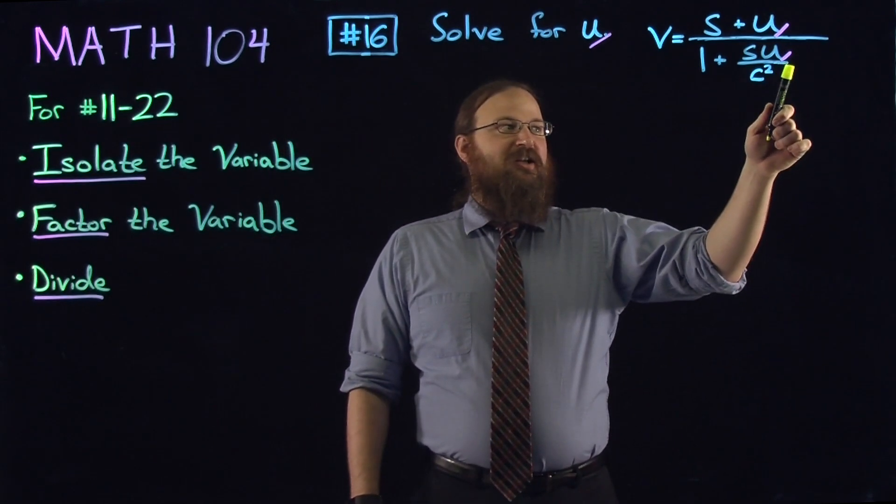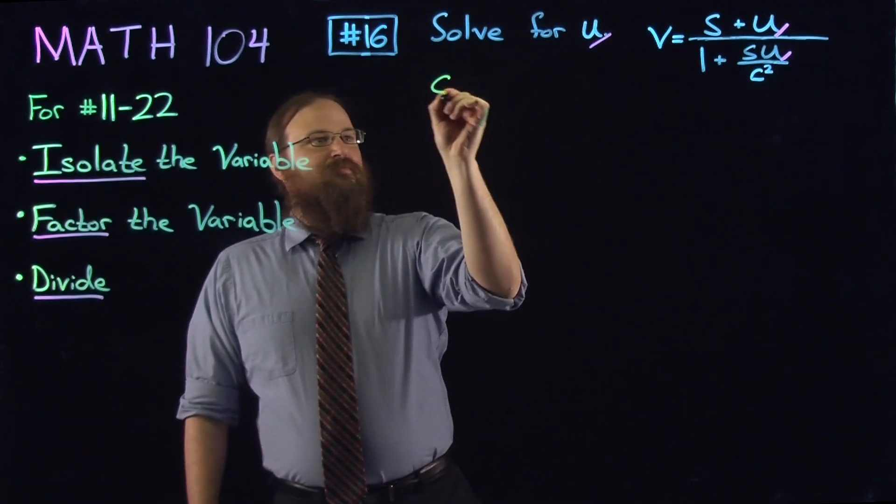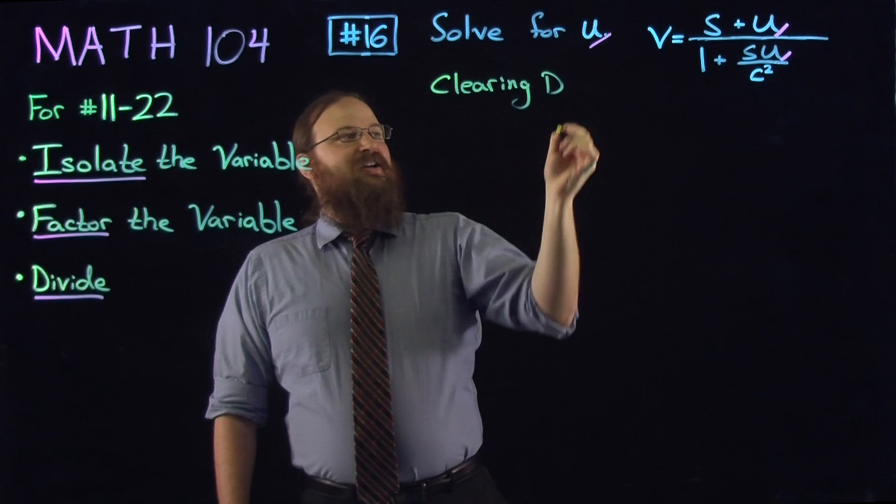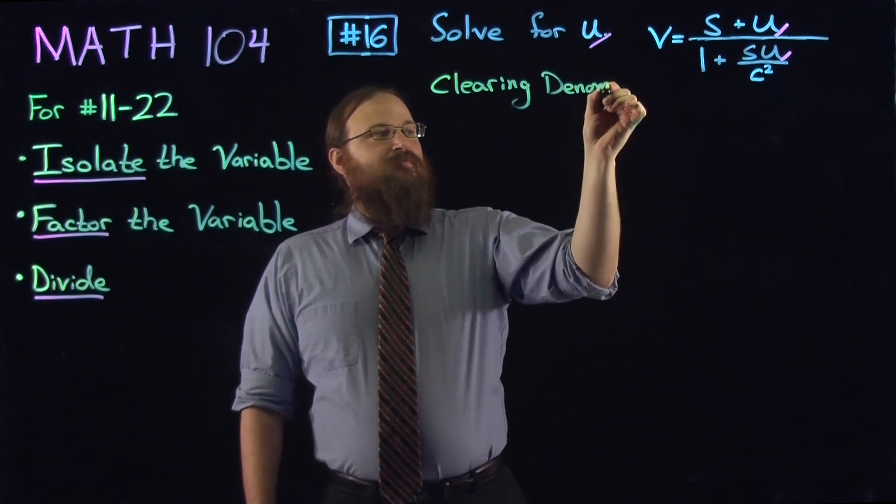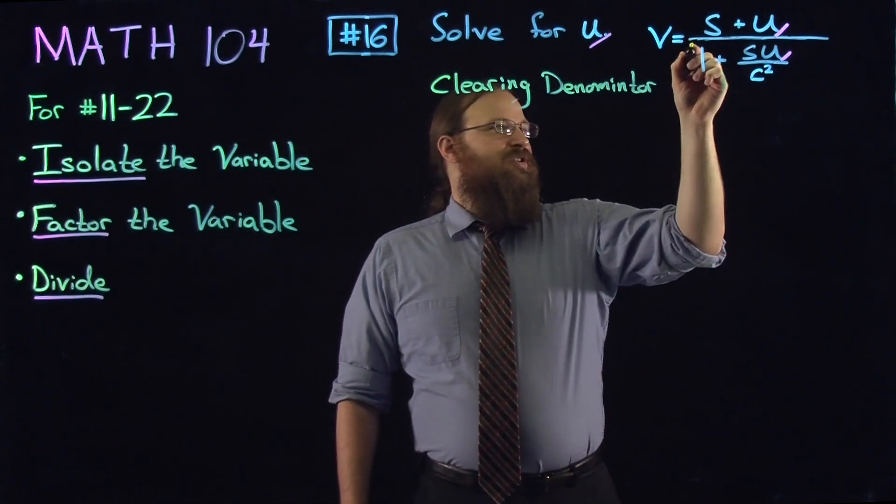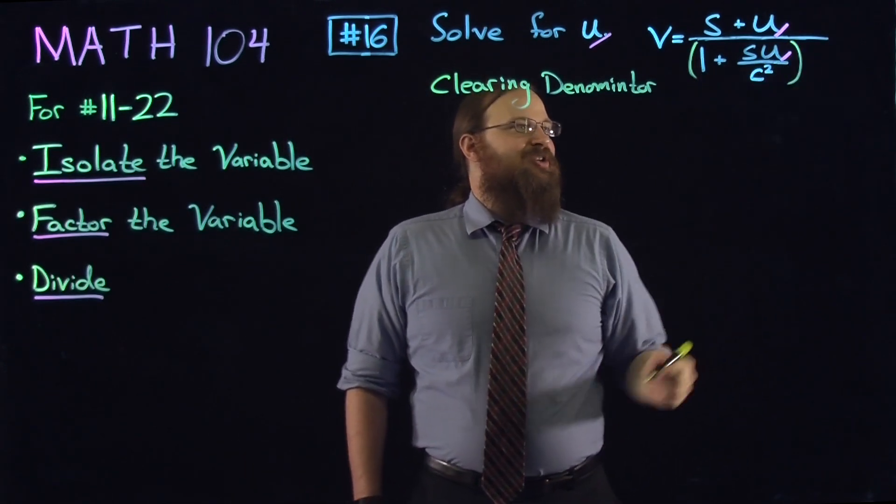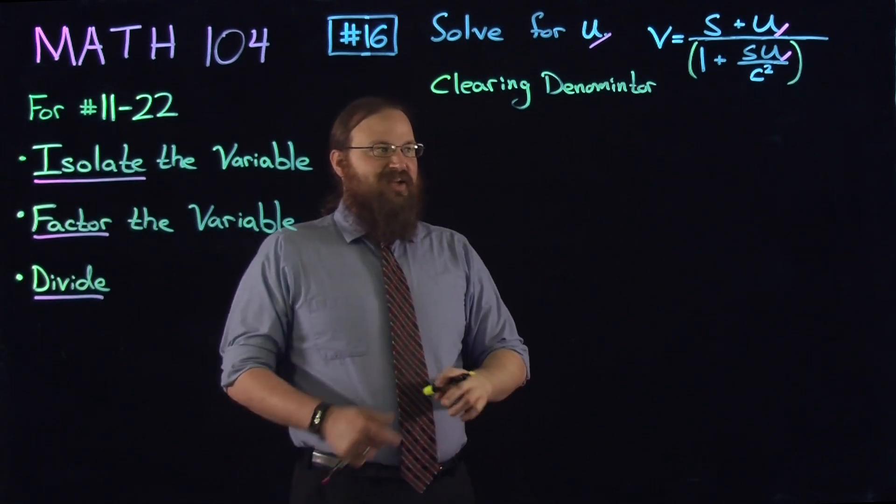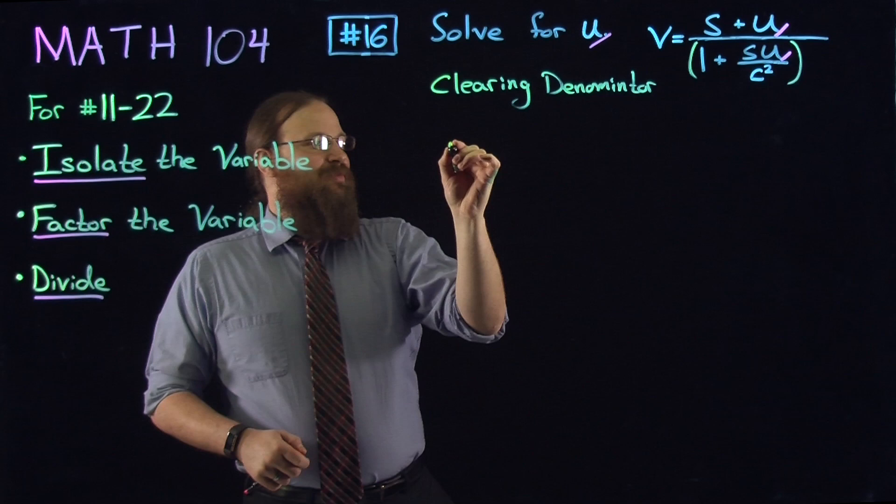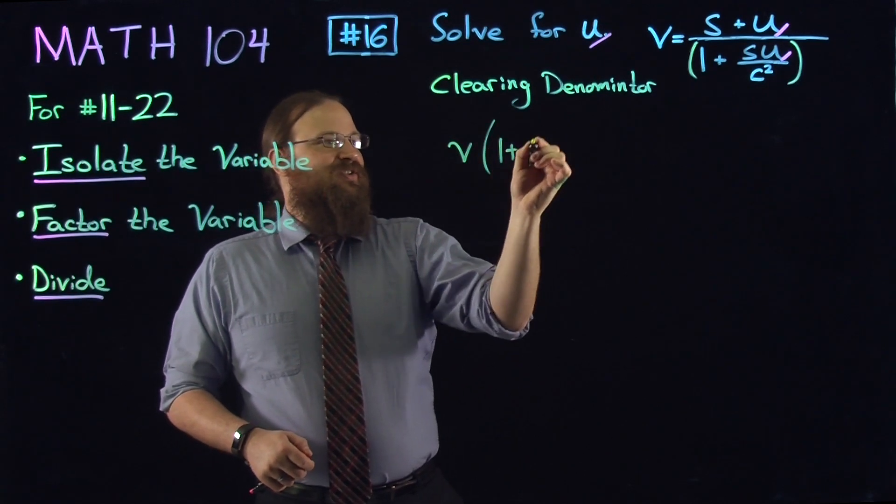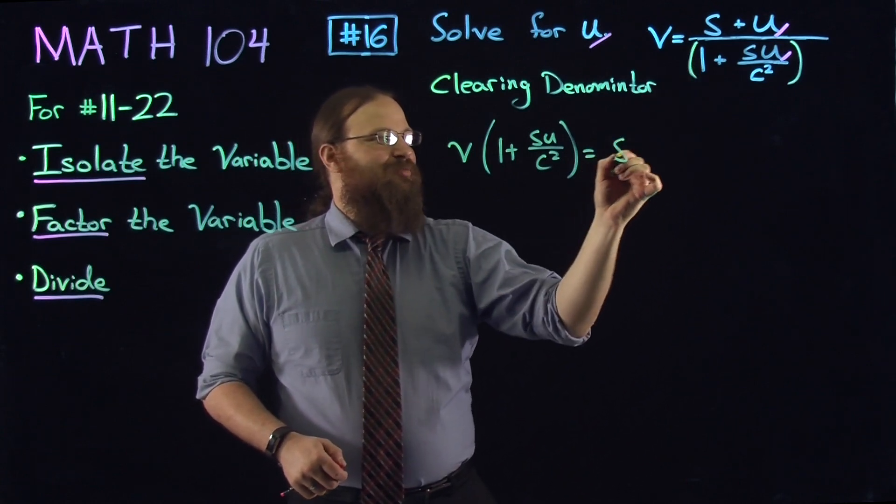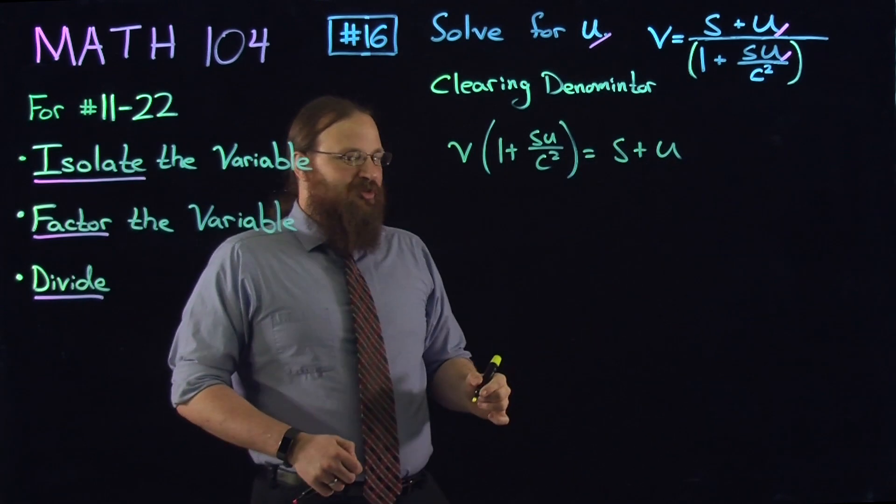Here, we're going to start by clearing denominators, and that means we'll have to find a common denominator. So here, one denominator, nothing to worry about with common denominators. We're going to multiply both sides by 1 plus su over c squared. When we multiply on the left-hand side, we'll have v times 1 plus su over c squared, and the right-hand side will have the same numerator, s plus u. So we've cleared the denominator.